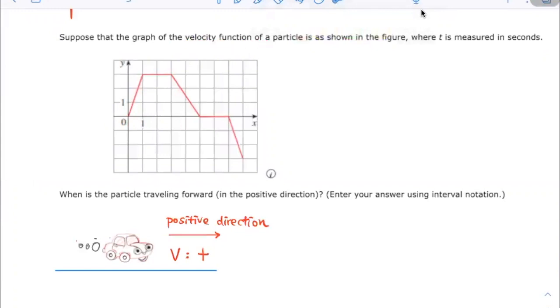The velocity is positive when it is above this x-axis. So this particle graph that is above this x-axis will have positive velocity.